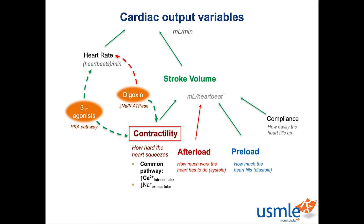Drugs that increase contractility — also known as positive inotropes — have potentially serious consequences, especially the longer you use them. When a person's in heart failure, it helps to know how to optimize heart function besides just giving drugs that might kill them. Fixing a patient's hypoxia, hypercarbia, and acidosis will permit optimal myocardial crossbridge formation without undue side effects, so for patients in bad heart failure, addressing these should be an initial part of resuscitation. In patients for whom blood supply to the heart is a known problem — like those with coronary artery disease — it's often beneficial to intentionally limit contractility to prevent chronic demand ischemia. Beta blockers and the non-dihydropyridine calcium channel blockers verapamil and diltiazem can be used to pharmacologically limit heart rate and contractility.